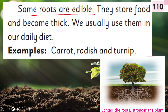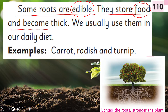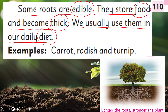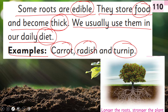Some roots are edible — kuch roots jo hain wo khate bhi hain. They store food — wo apne andar khana store kar leti hain and become thick, kaafi moti ho jati hain. We usually use them in our daily diet. Examples: carrot, radish, turnip. These are all edible roots — the underground part of the plant.